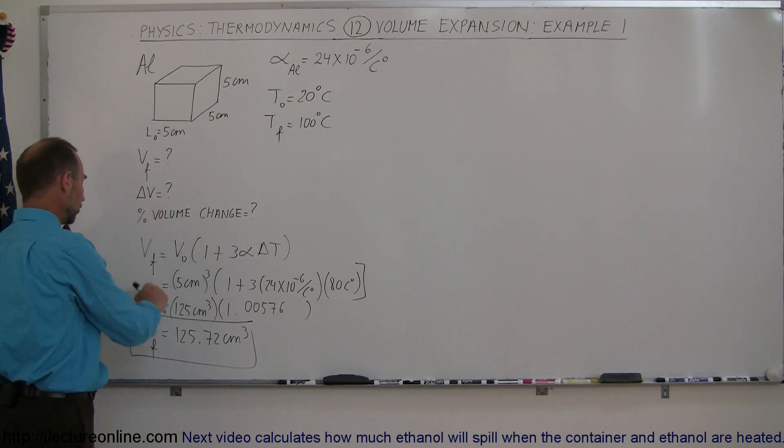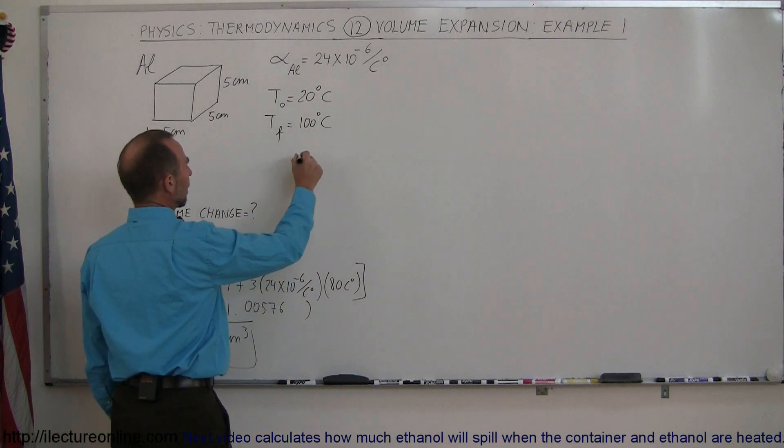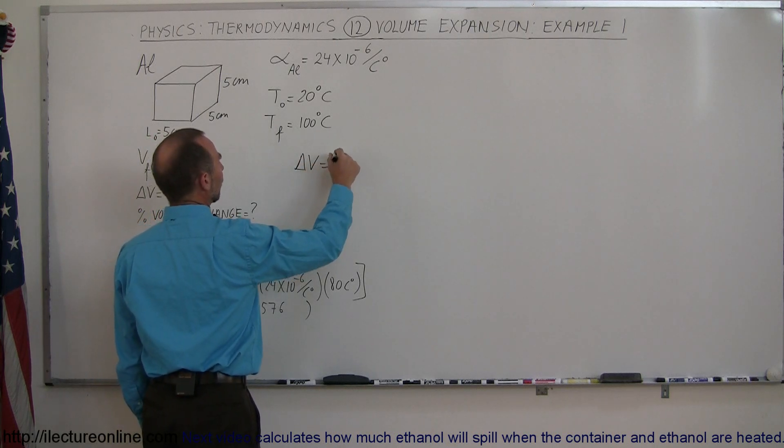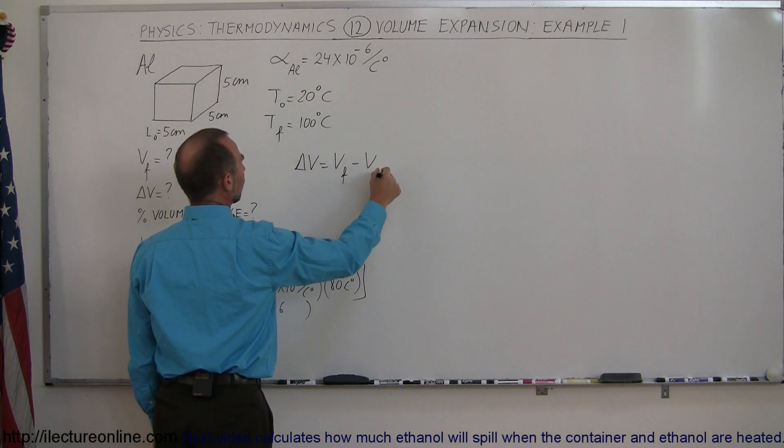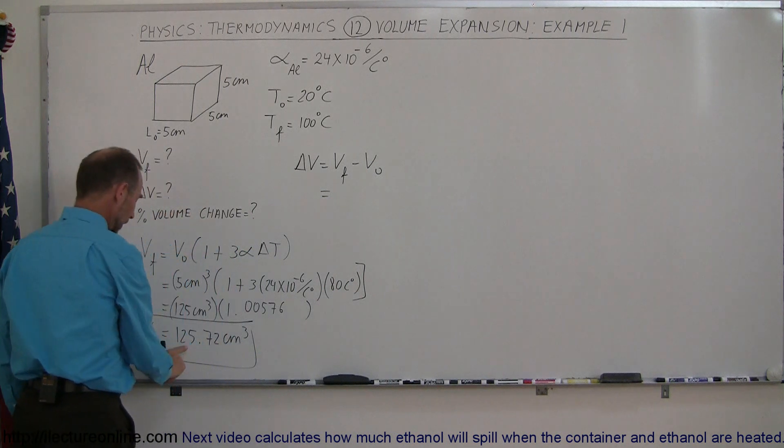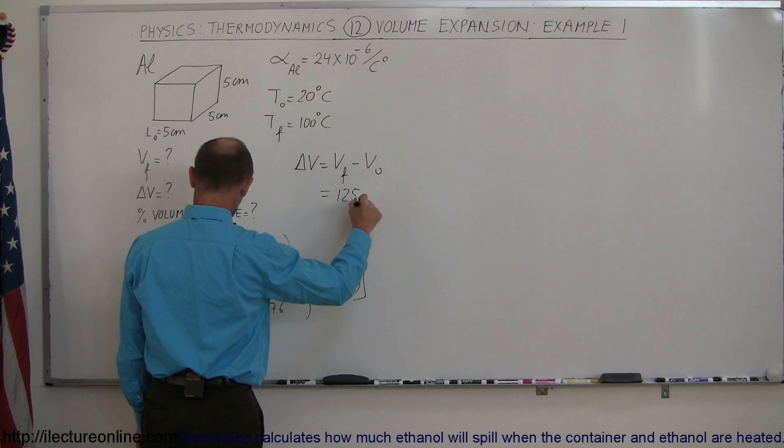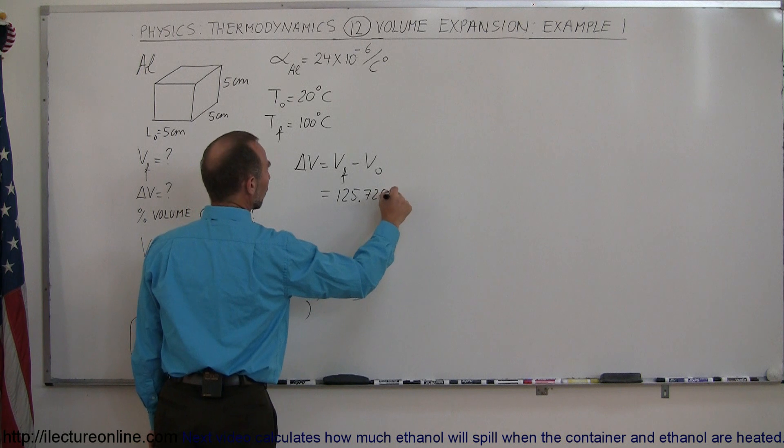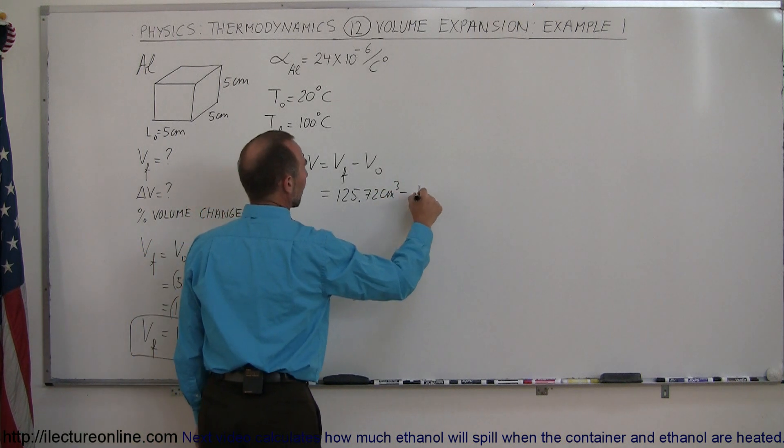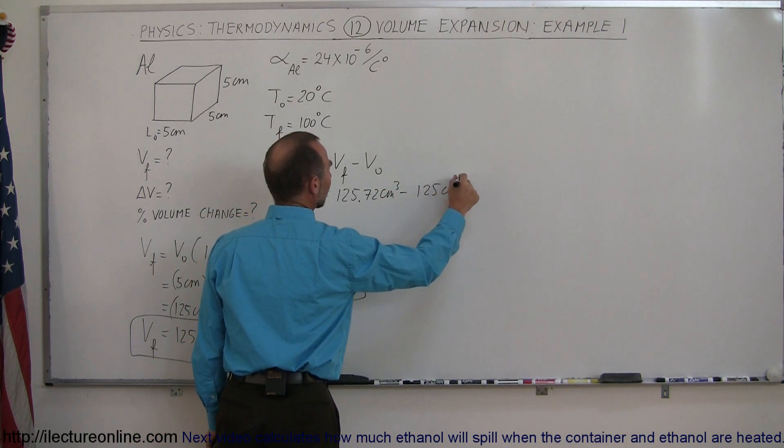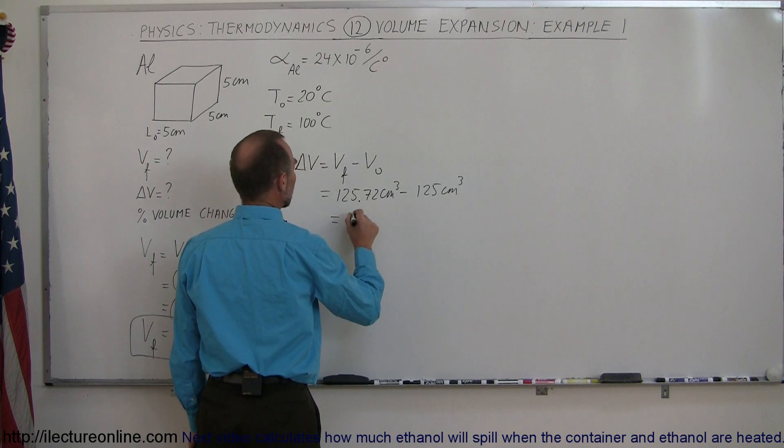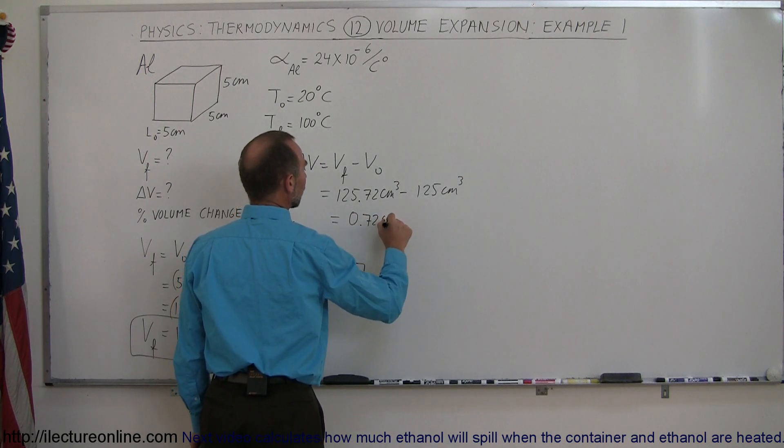First of all, what is the change in the volume? Delta V is equal to V final minus V initial. And V final is what we got right here. That's 125.72 cubic centimeters. And subtract from that the original, which is 125 cubic centimeters.